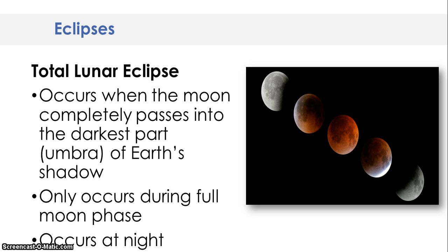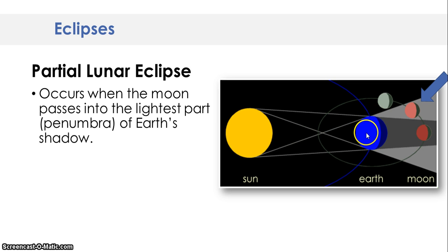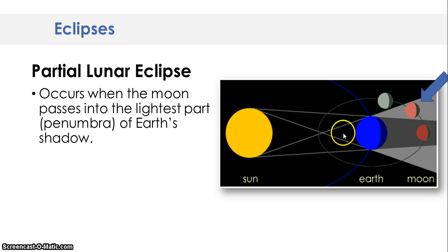This only occurs during a full moon phase. When we have a partial lunar eclipse, this is when the moon passes into the lightest part of the Earth's shadow — the penumbra. So if we look at this diagram, this is our sun, the light source, and it's shining on the Earth. The Earth is casting a shadow on the moon, causing it to have either a total or partial lunar eclipse. When light shines on an object, it deflects around, causing a cone shape, which is why we get the darker shadow and the lighter shadow.